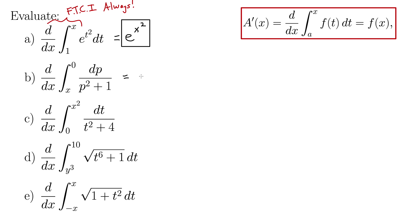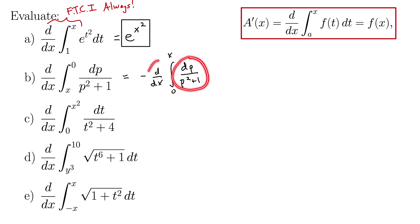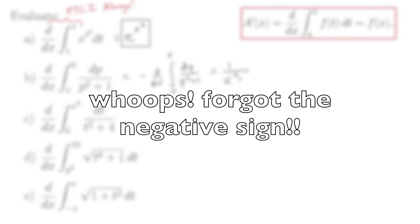So this gives — I'll bring that negative all the way outside — negative d by dx, integral from now 0 to x. See how we switched those limits of integration? The inside stays the same: dp over p squared plus 1. Now we let the theorem work its magic. It simply tells us it's the same function, but now the variable is x instead of p. So this becomes negative 1 over x squared plus 1.